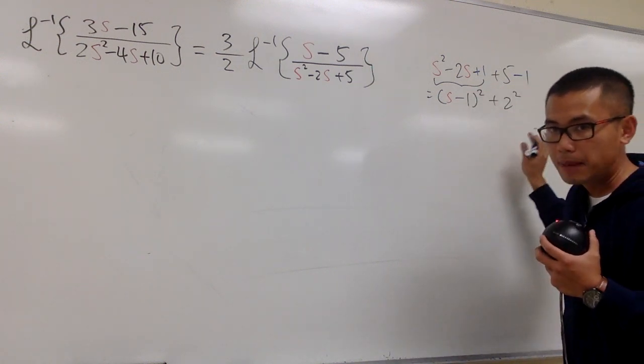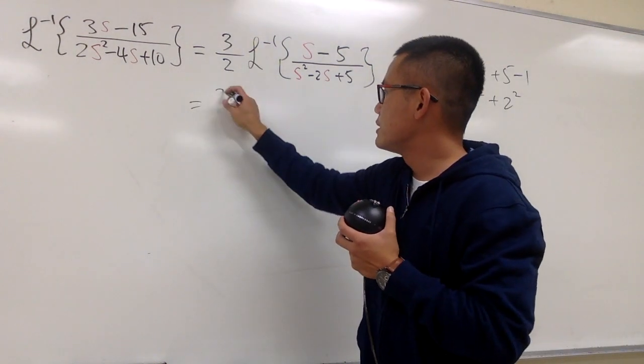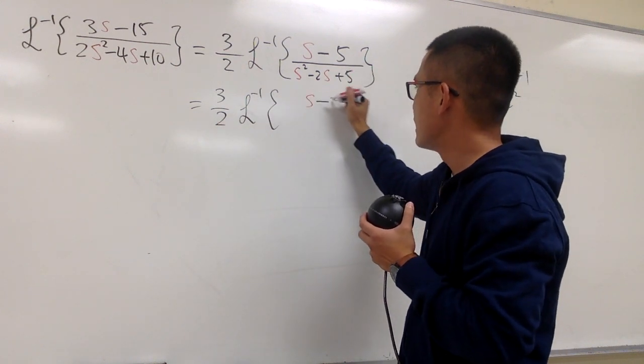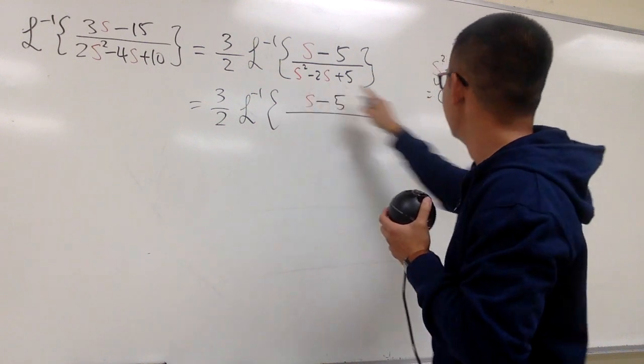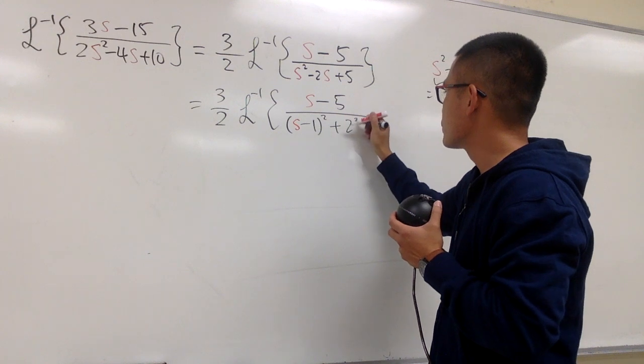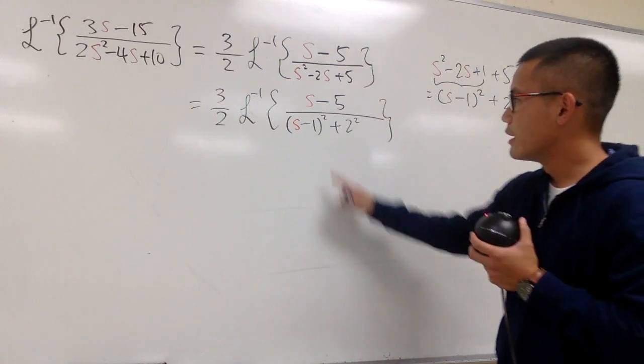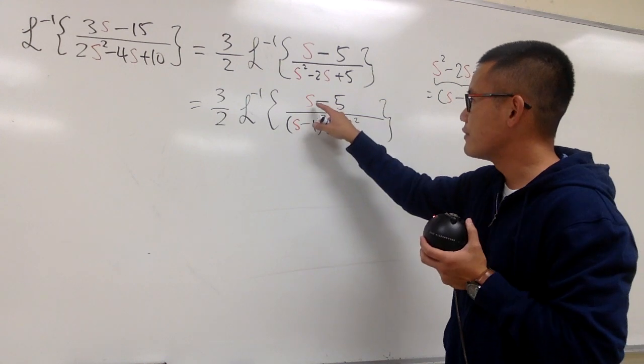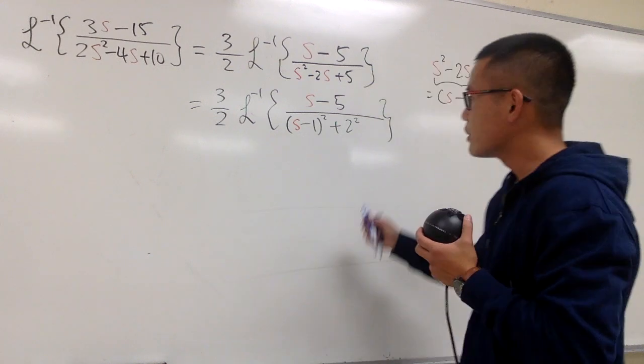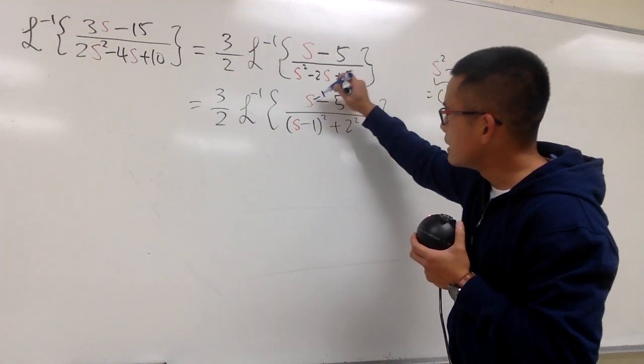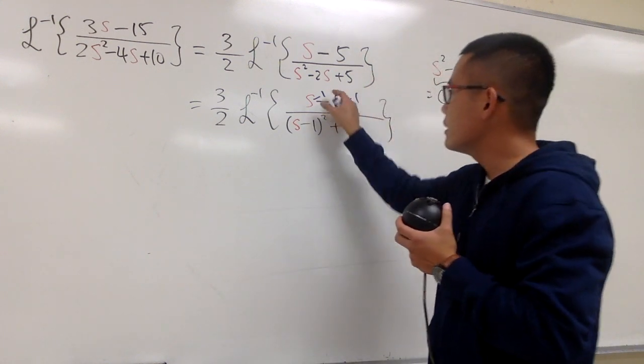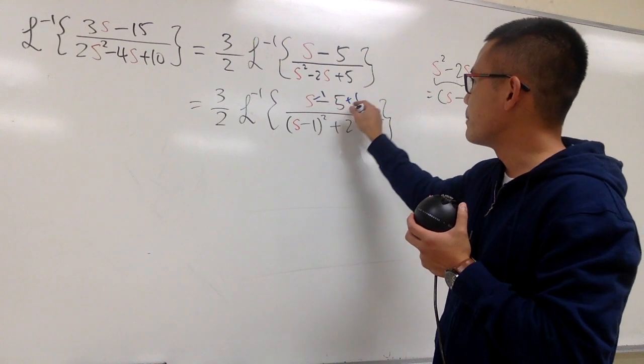And then you will see that the first three terms is a perfect square, and this is going to be s minus 1 squared, and then this is plus 4, which is the same as 2 squared. This is the new denominator. So here we still have the 3 over 2, and then the inverse Laplace. We have the s minus 5 over s minus 1 squared plus 2 squared. Okay, here we have s minus 1. On the top, we have s minus 5. That's not good. We have to make sure this match with that. But it's okay. We can make sure that's just s minus 1, and then plus 1. So in another word, s minus 1, and then look at this as negative 5 plus 1, which is minus 4.